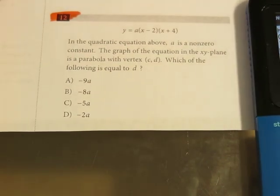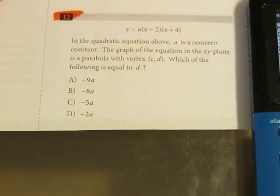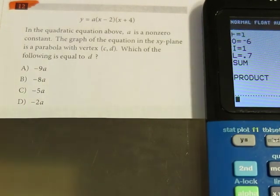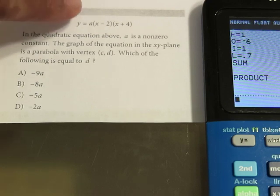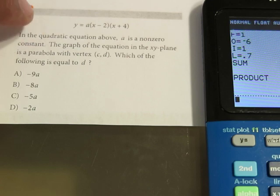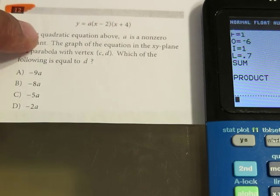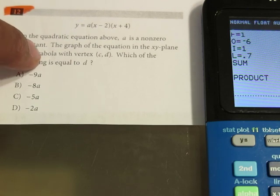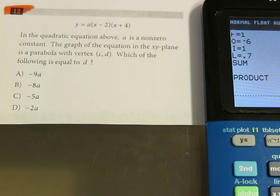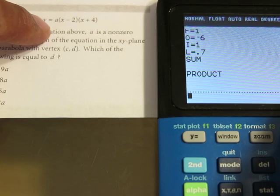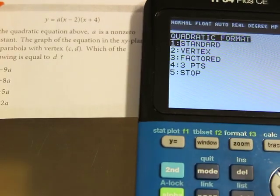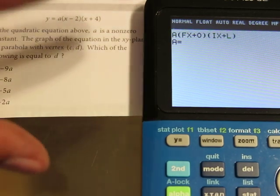Alright, here's another one. Now this one was taken from the practice SAT test number 3. It's actually in the non-calculator section, but I wanted to include it just to show you the functionality of the program. So let me read this question. Again, we have another quadratic in factored form. It says a quadratic equation above, A is a non-zero constant. The graph of the equation in the xy plane is a parabola with the vertex at c, d. Which of the following is equal to d? Basically what they want to know is, when it's in vertex form, what is the value of the y coordinate. So we can do that. Now, you can put any non-zero number in for a. I'm actually going to use a fraction just to show you how it would handle it.